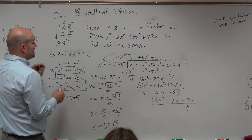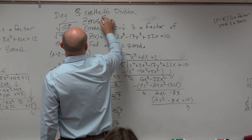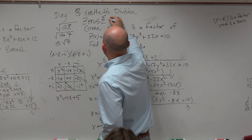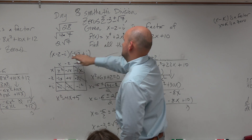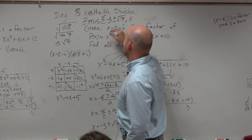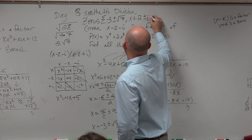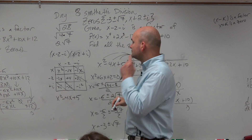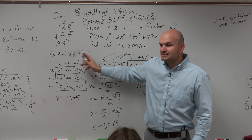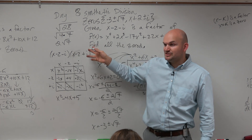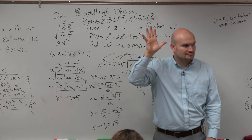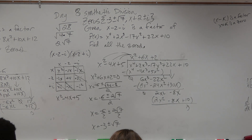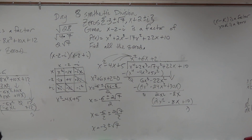So if I want to write my zeros, the zeros are going to be negative 3 plus or minus radical 7, and x equals 2 plus or minus i. Because if you were to set those factors equal to zero, you'd add 2 and then have plus or minus i. That's a lot, guys — it's a big problem. But the purpose of this problem is not just to be intimidating.